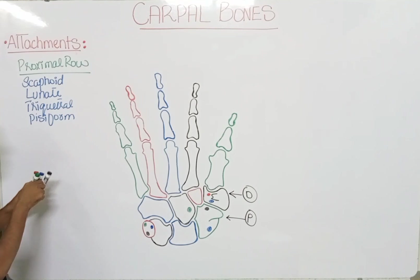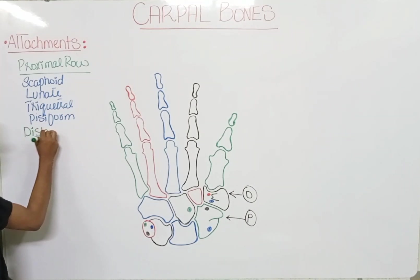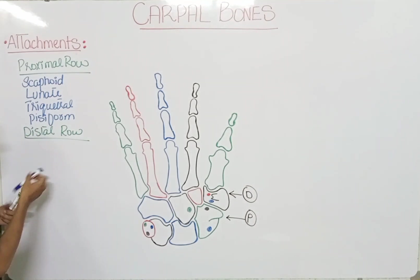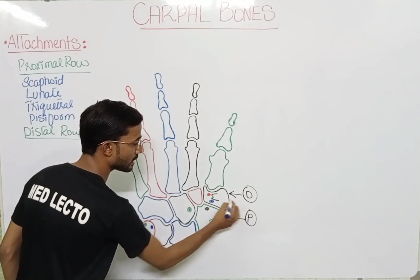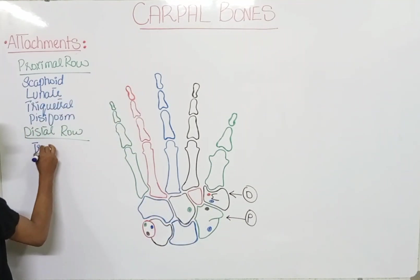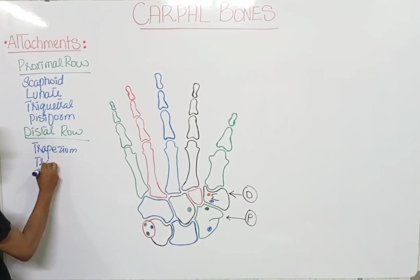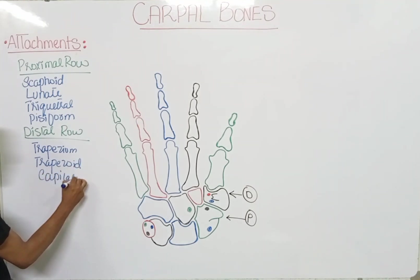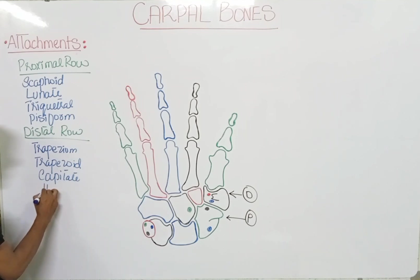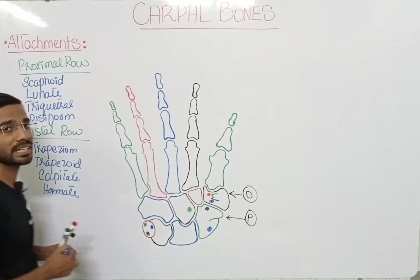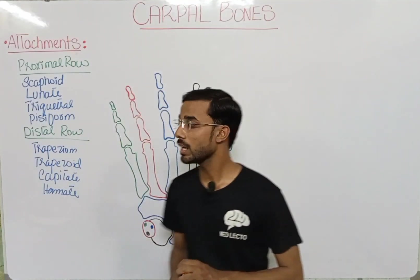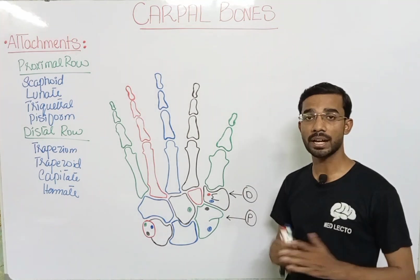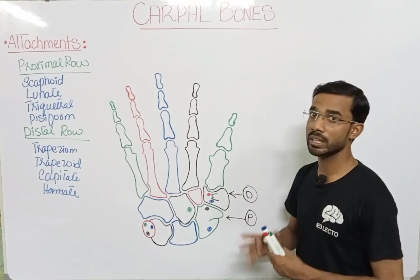Next is the distal row. In the distal row you again see four bones starting from the lateral side. The first one is the trapezoid, the third one is the capitate, and the fourth one will be the hamate. So these are basically the eight bones that actually lie in the two rows, proximal and distal. Now we will see the different attachments — different muscles and the different ligaments to the carpal bones.